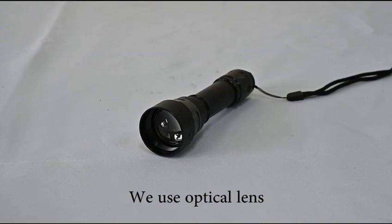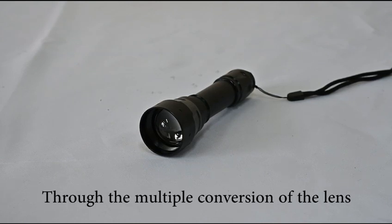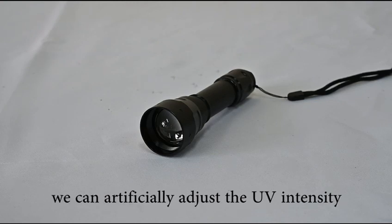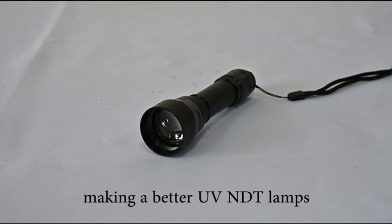This is the lens structure. We use optical lens. Through the multiple convexions of the lens, we can artificially adjust the UV intensity, making a better UV NDT lens.